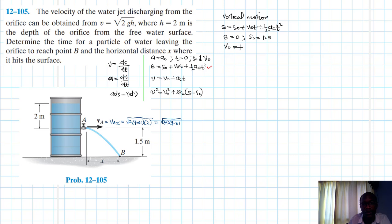V naught is equal to vay, this is equal to zero, and our ac is equal to minus g, which is equal to minus 9.81.